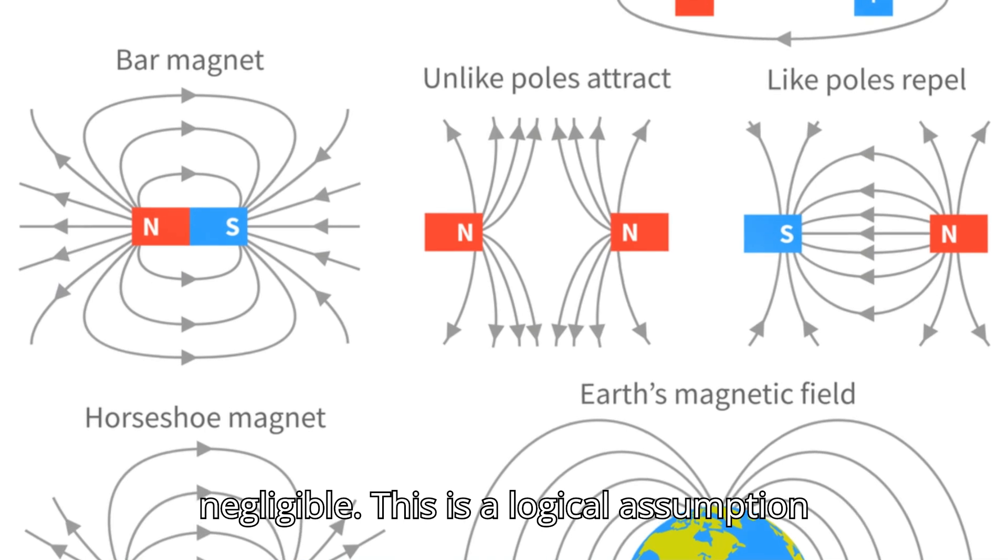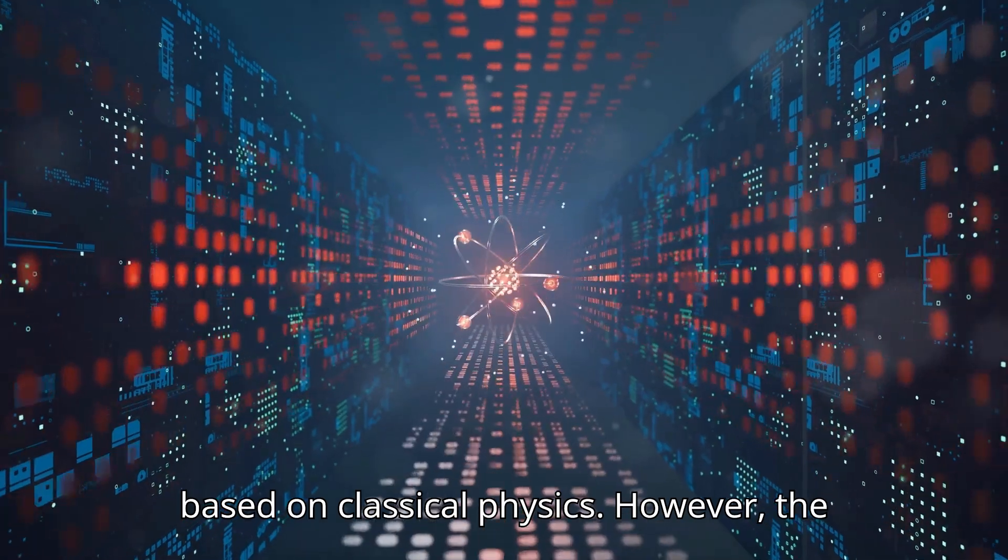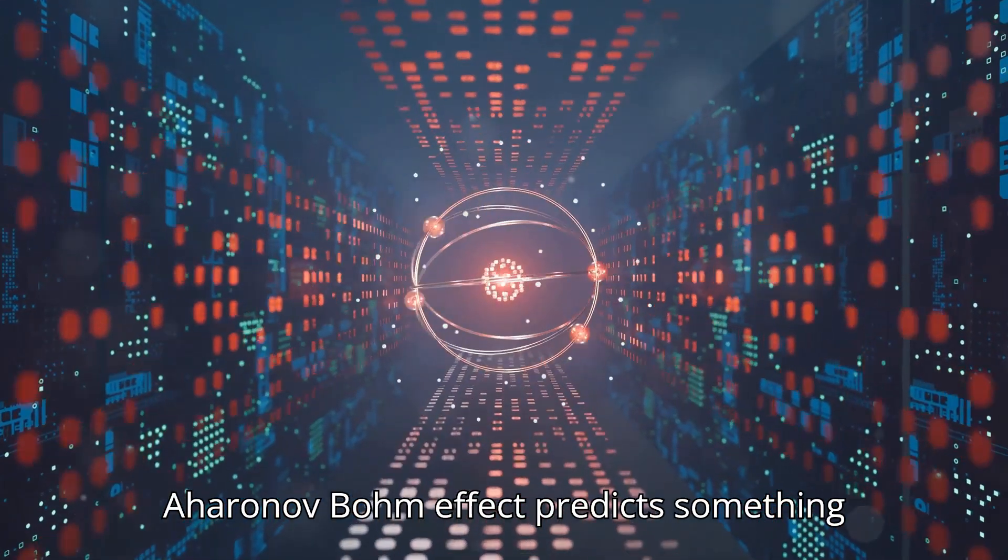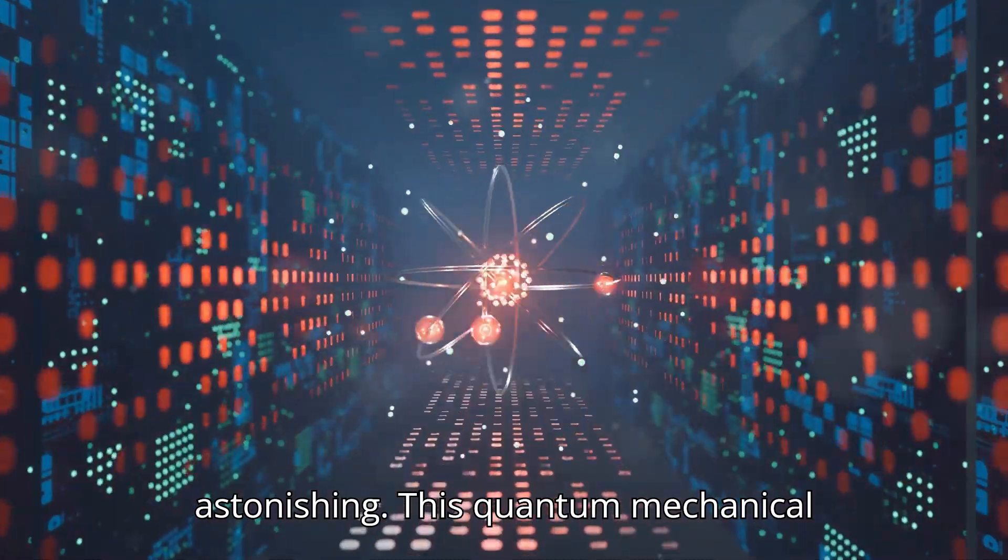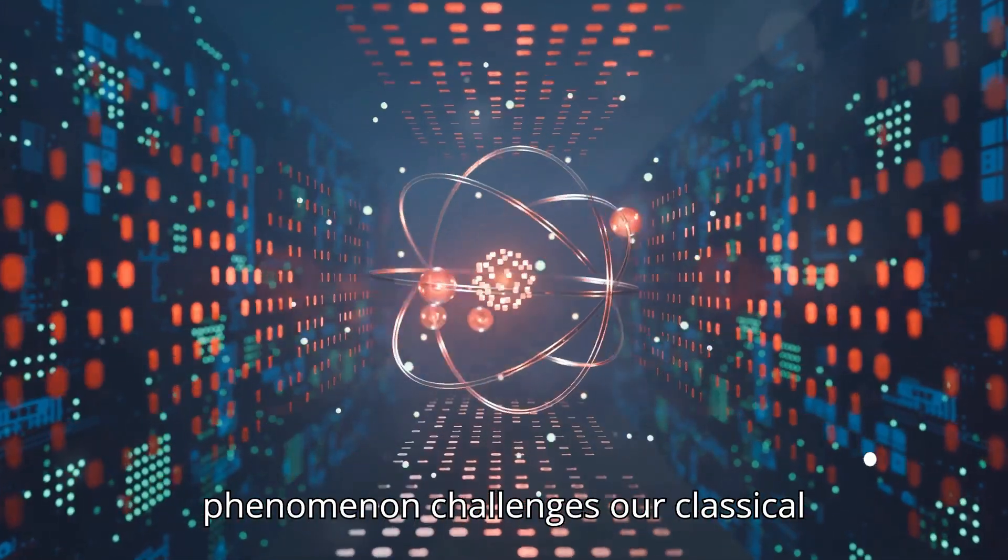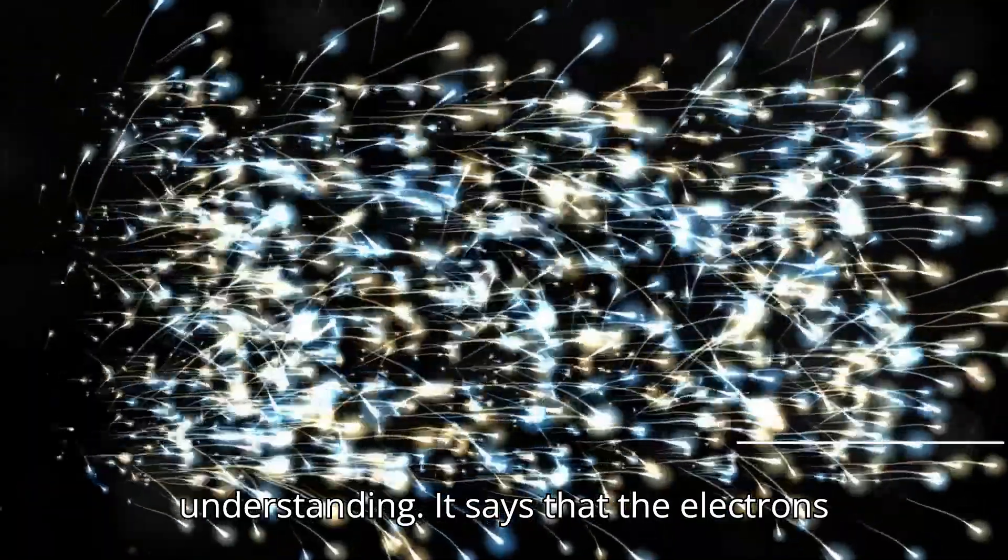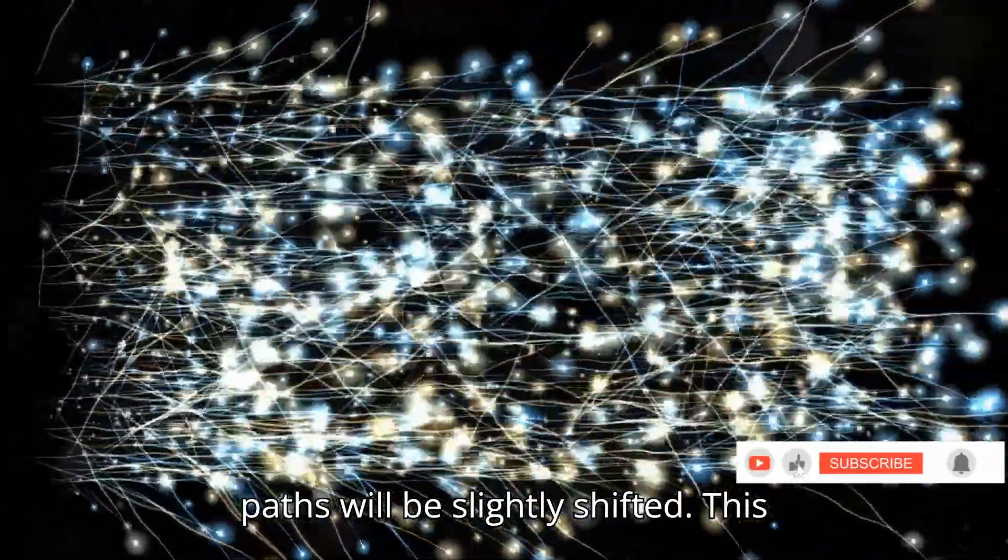This is a logical assumption based on classical physics. However, the Aharonov-Bohm effect predicts something astonishing. This quantum mechanical phenomenon challenges our classical understanding. It says that the electrons' paths will be slightly shifted.